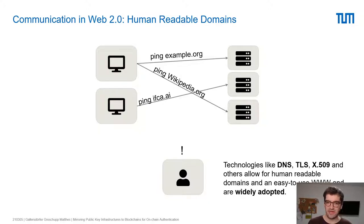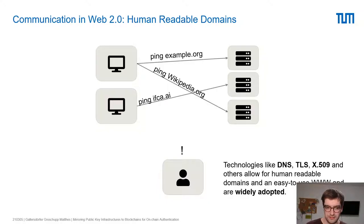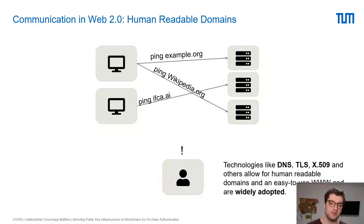As a community we developed technologies like domain name systems, transport layer security, and certificate standards like X.509 to allow human-readable domains — for example Wikipedia or the IACR. These systems have become widely adopted in the last 20–30 years, used by every end user in daily life. With TLS we're also able to secure communication between participants so it's encrypted and cannot be tampered with.